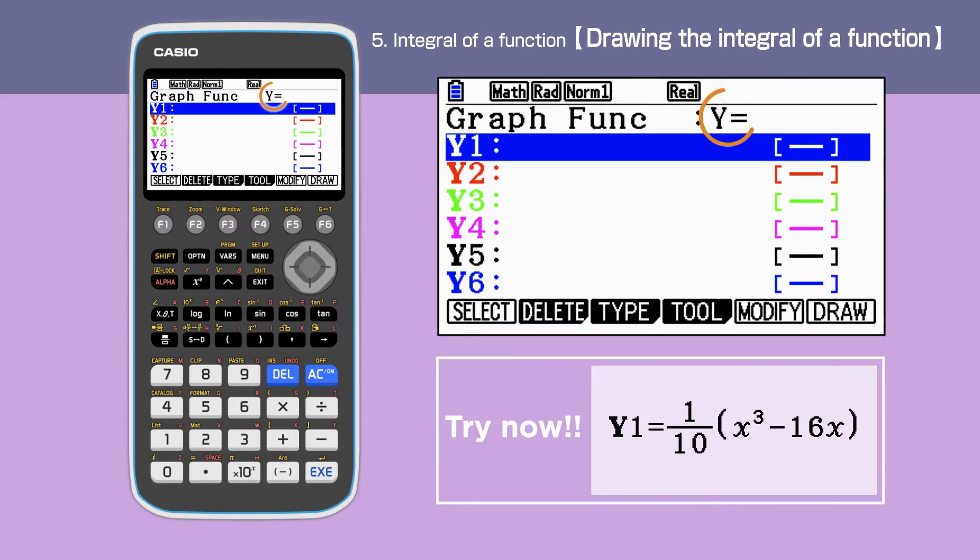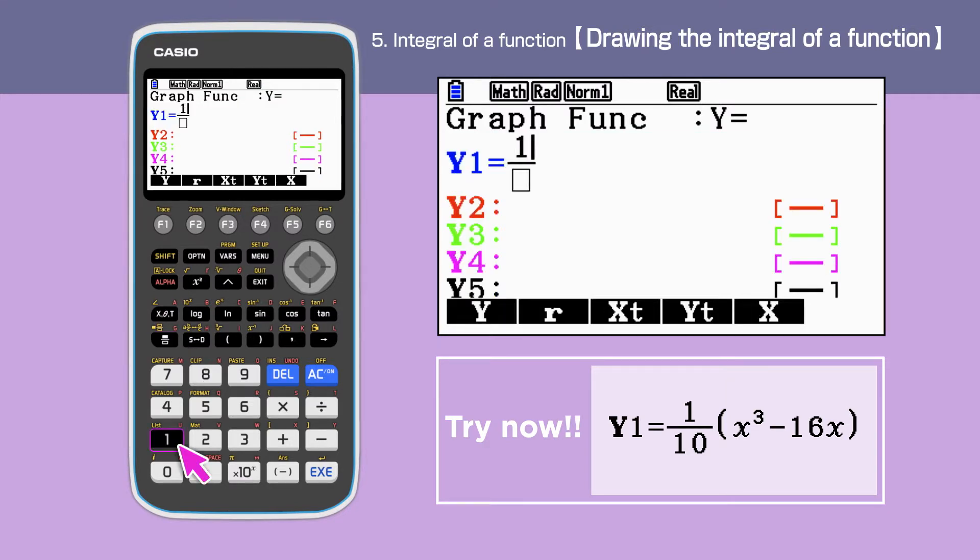Check that the graph function shows y equals. Then we first draw the graph of y1 equals 1 over 10 bracket x cubed minus 16x. To get the power of 3, we will need to press the x theta t key, then hat key.